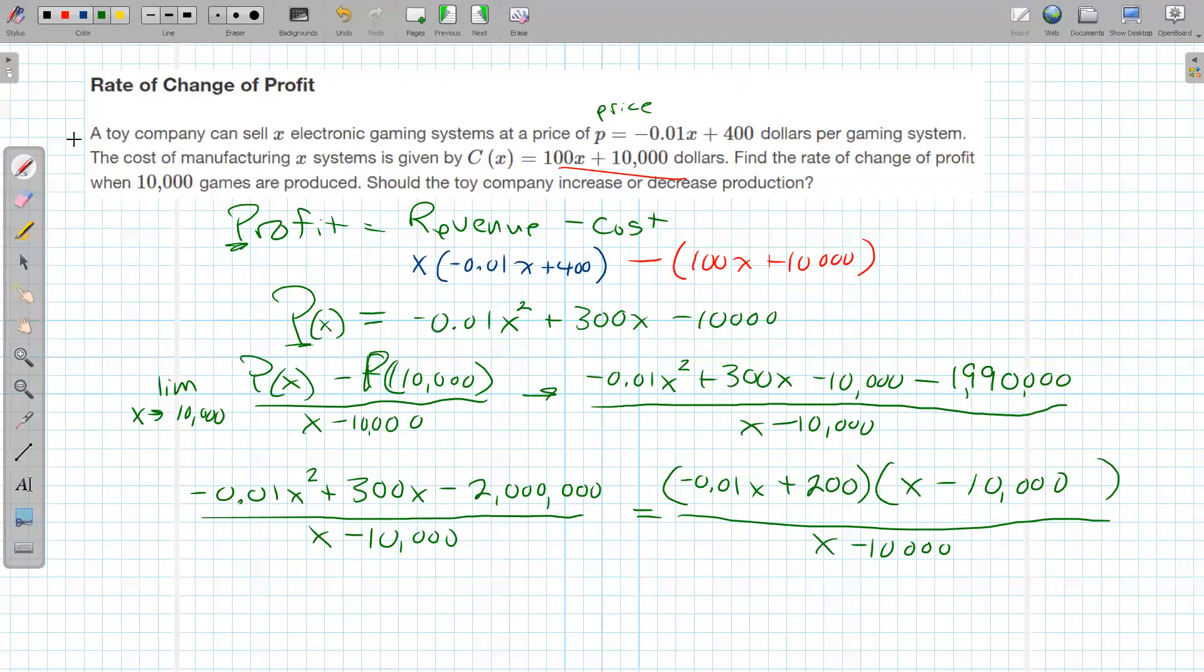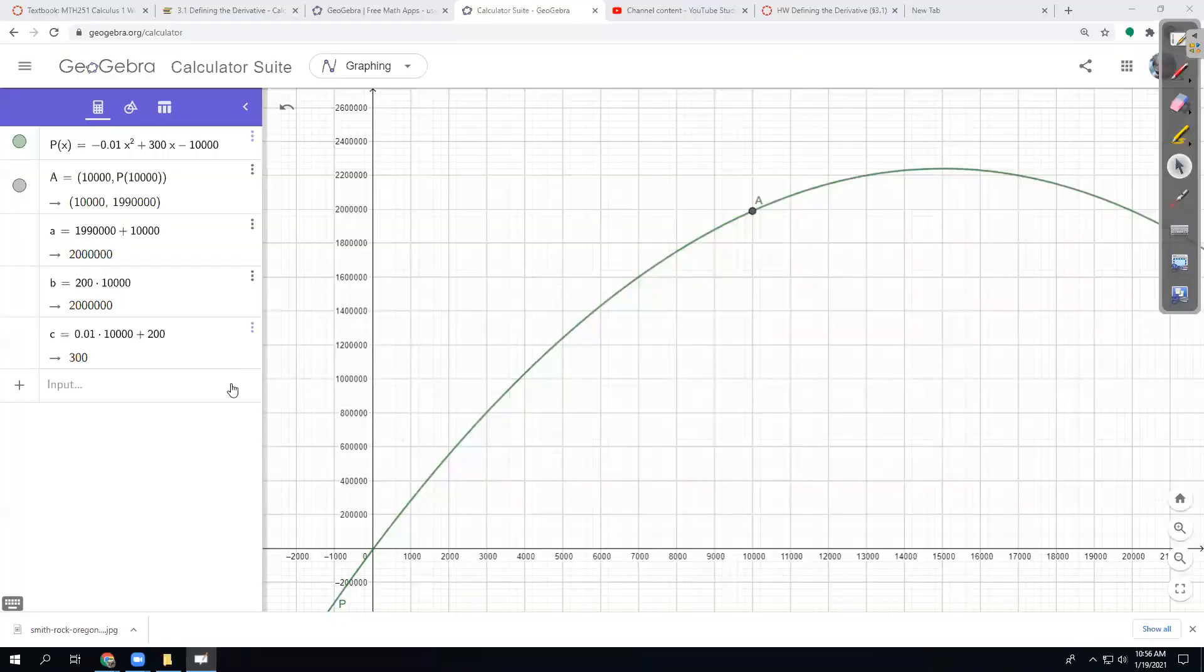So now we want the limit of this thing right here. And then we got lucky, as we do in many of these lovely calculus problems. Isn't that beautiful? That works out. And these numbers up here really aren't that special, by the way. This is just a marvel of calculus. So now we simplify this to the limit as x approaches 10,000 of negative 0.01x plus 200. And so at this point, the limit laws say, hey, if the limit exists, we can just plug it in. So let's plug in the 10,000 and see what we get.